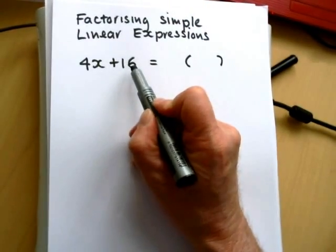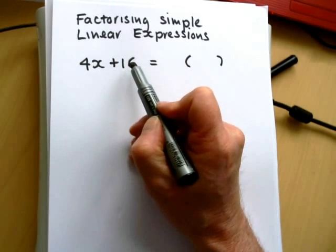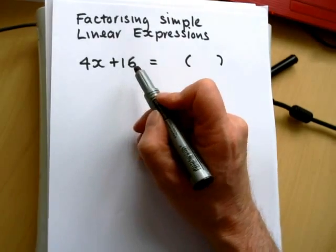Now we look into both terms and we look for something that's in both. It's not obvious when you look at it, but you should notice that 4 and 16 are both in the same times tables. They're in the 4 times tables.